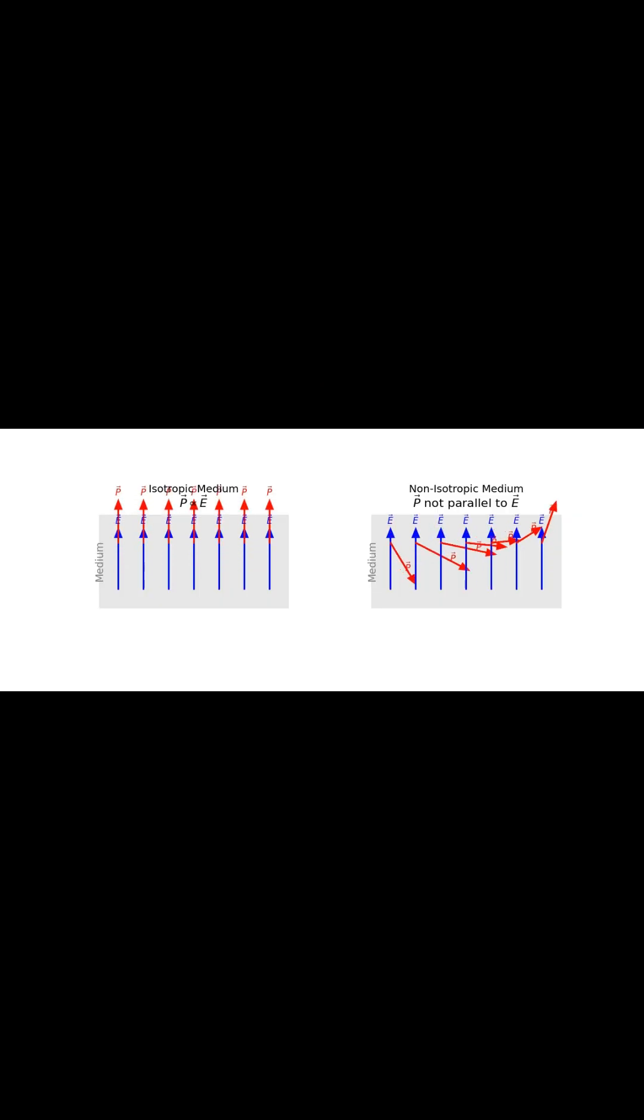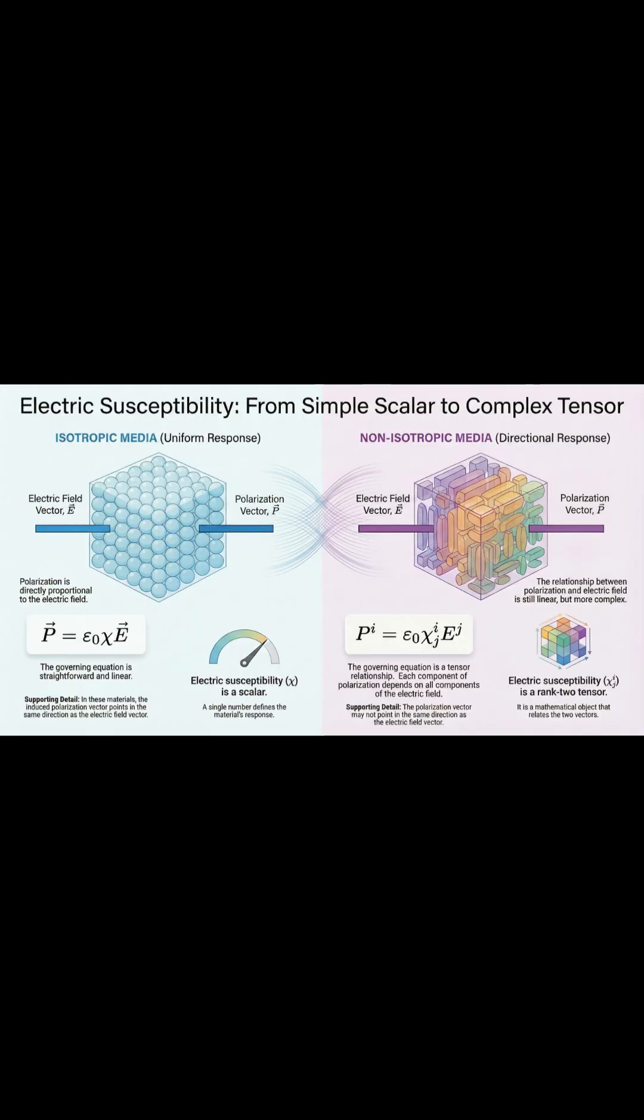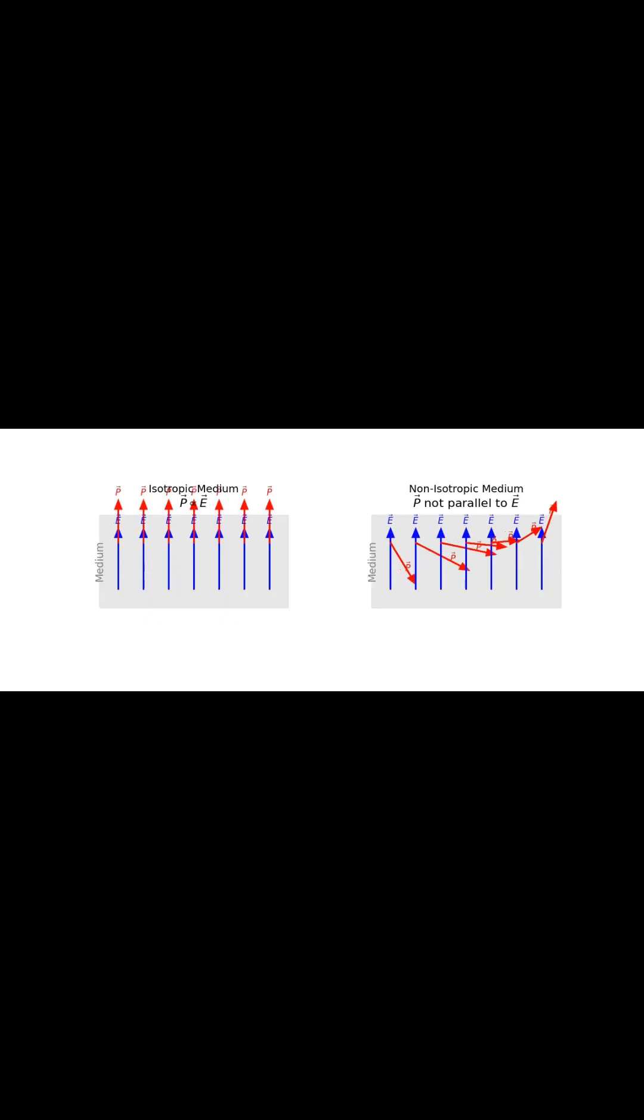So when an electric field comes along, the material's electrical response, its polarization, just goes perfectly parallel to the field. But a non-isotropic medium like a crystal, well, its internal structure is directional, which means its electrical response is almost always going to be misaligned from that input field.